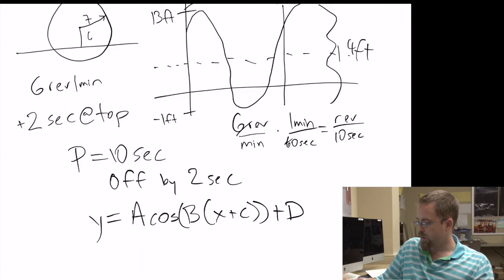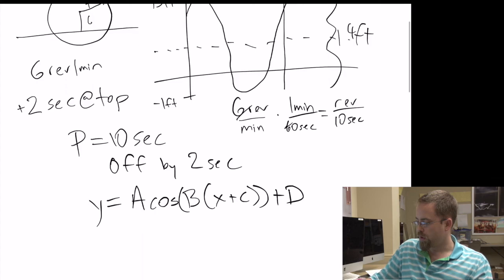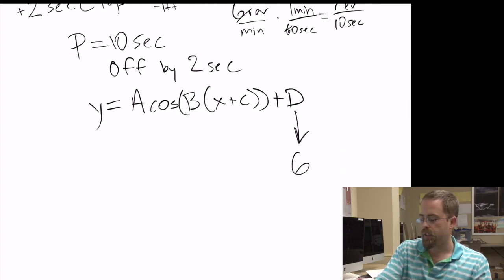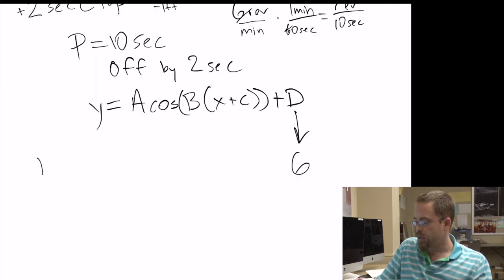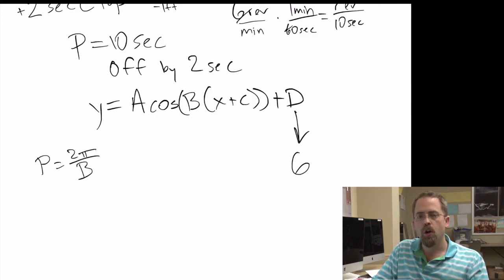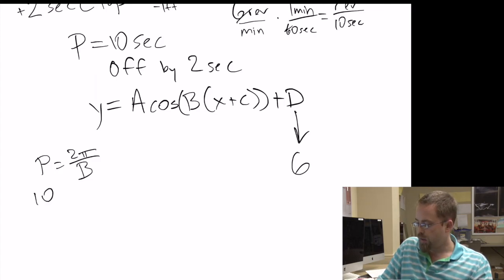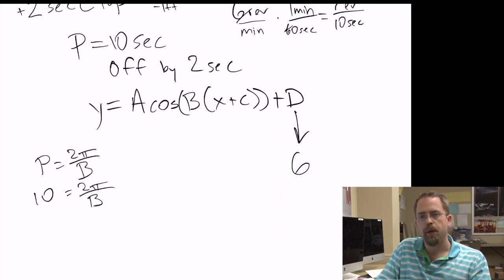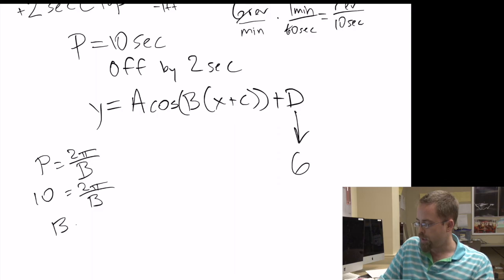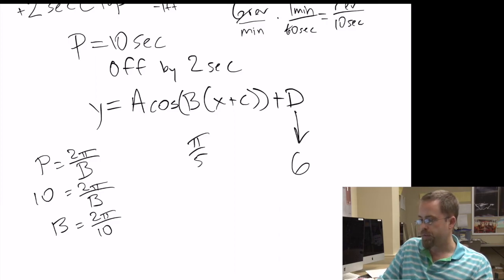The d here — the shift up — is going to be at 6. So we're starting to piece this together. The period: this is that thing about the period. The period equals two pi divided by b. So if we know we want the period to be 10, we need to divide by some b that will get us that. If we multiply both sides by b and divide both sides by 10, then b equals two pi over 10, which is the same as pi over 5.